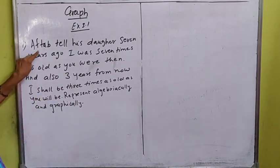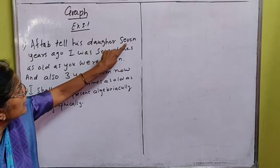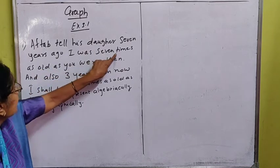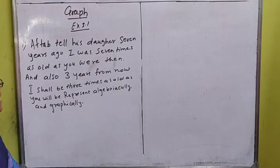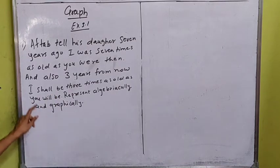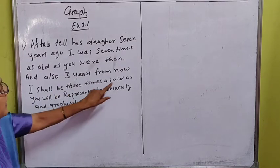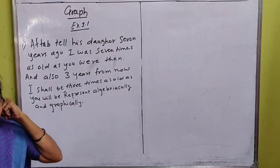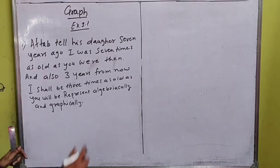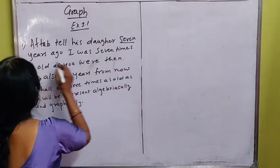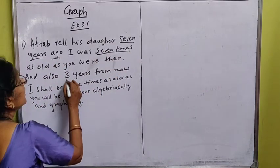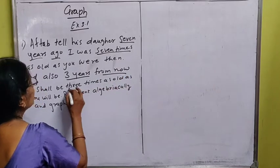Let us look at the first sum of exercise 3.1. Aftab tells his daughter: seven years ago, I was seven times as old as you were then. Also, three years from now, I shall be three times as old as you will be. Represent this algebraically and draw a graph.